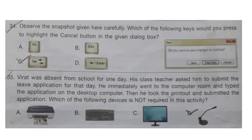Question 33: Which of the following statements is correct regarding the command buttons marked as X and Y in MS Paint? The correct answer is option A — X reverses the current selection and Y selects the entire drawing. Question 34: Which key would you press to highlight the Cancel button in the given dialog box? The correct answer is option C — Tab. Question 35: Virat was absent from school; his class teacher asked him to submit a leave application. He typed the application on the computer and took a printout. Which device is not required in this activity? The correct answer is option D — a mic is not required. Thank you for watching. Please subscribe to Olympiad Trainer for more solved question papers and hit the like button if you found this video useful.